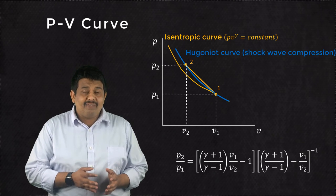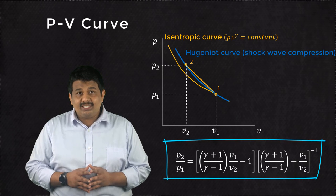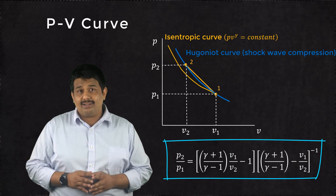For a calorically perfect gas, the Rankine Hugoniot relationship can be mathematically written as follows. That brings us to the end of this lesson.